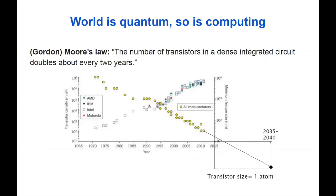But this trend cannot continue forever. If it continues, by 2035–2040 the size of a single transistor would be that of one atom. At that point transistors would be governed by the laws of quantum mechanics, which is different from classical mechanics — implying we cannot run computations in exactly the same way as today. Something will be different if we want to keep scaling down processors and increasing transistor density.